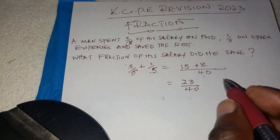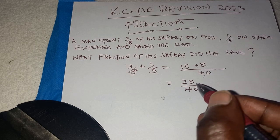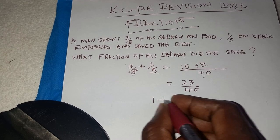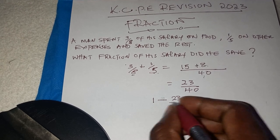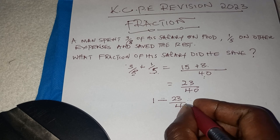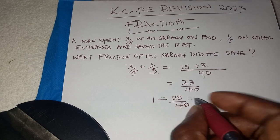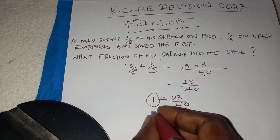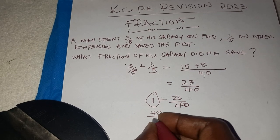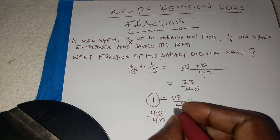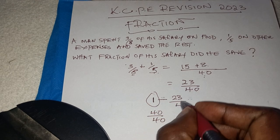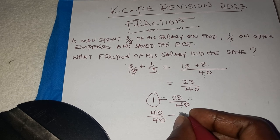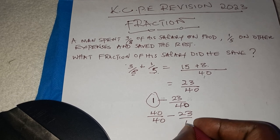So to get the fraction which was saved, you are going to say 1 minus 23 over 40. It is good to note that this 1 is equivalent to 40 over 40. So we say 40 over 40 minus 23 over 40.